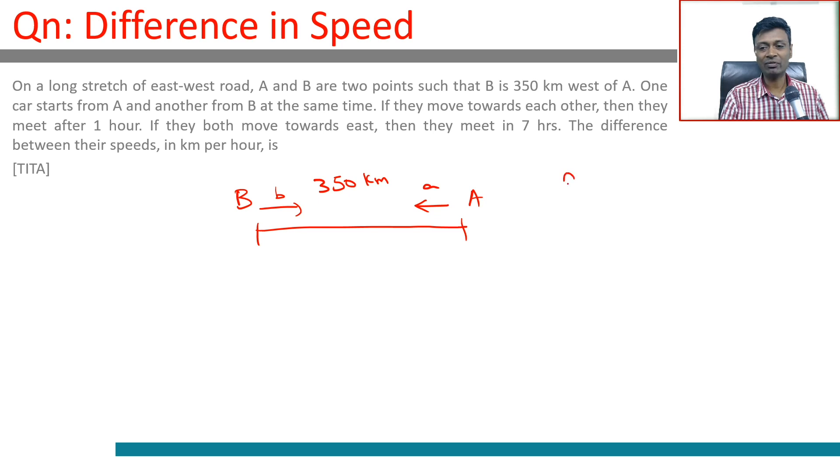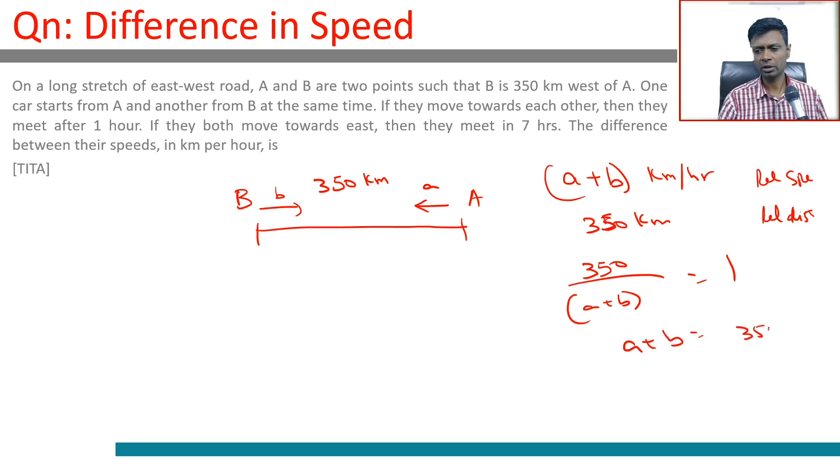Our relative velocity is A plus B kilometers per hour. Relative distance, this is the relative speed. Relative distance is 350 kilometers. Time taken is one hour. So 350 by A plus B equal to one, or A plus B is 350 kilometers per hour. Wonderful.